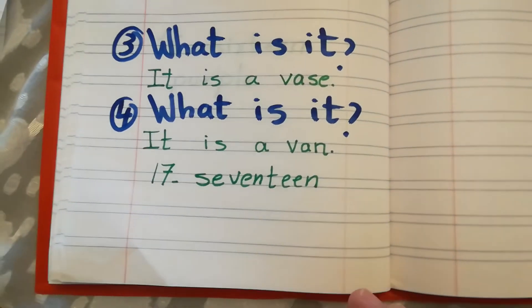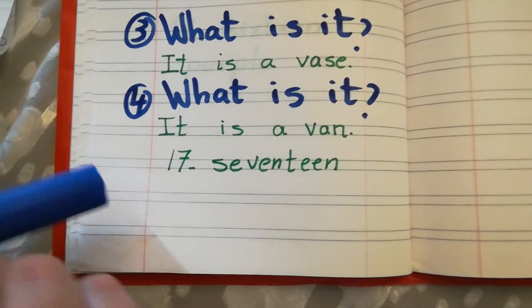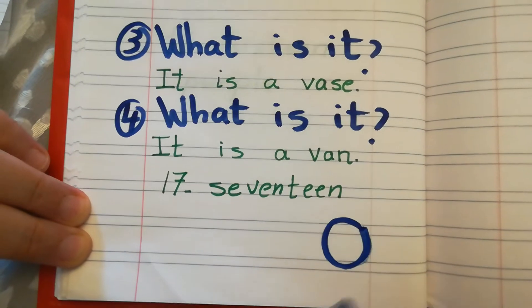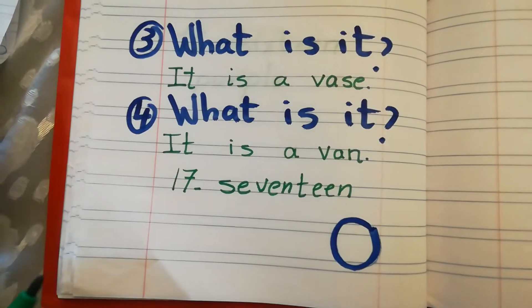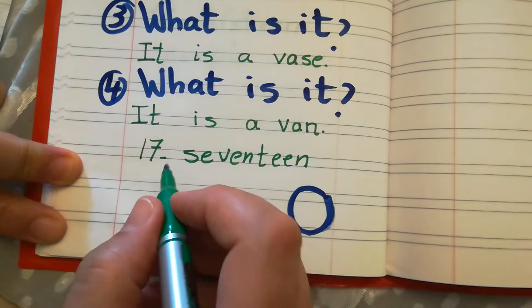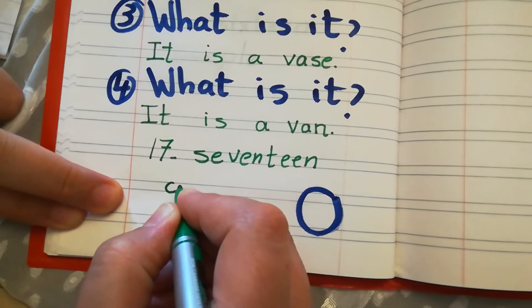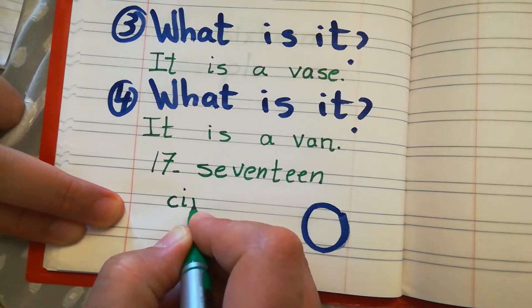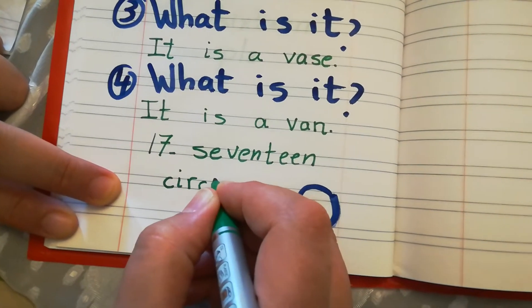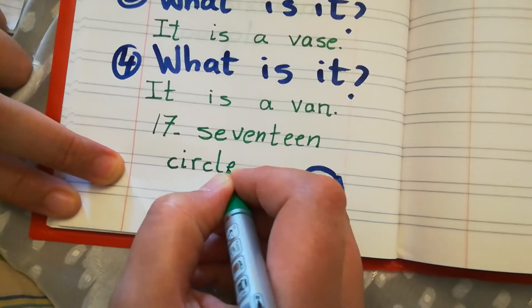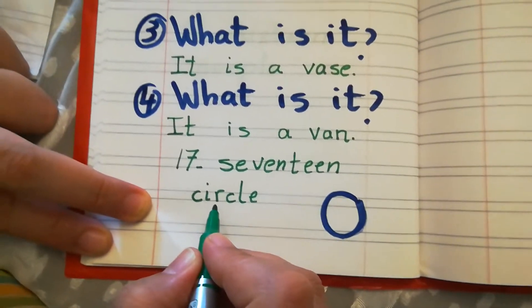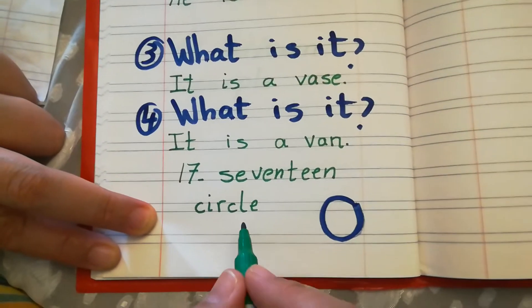Today we are going to learn a new shape. What is this shape? Circle. C, I, R, C, L, E. Circle. Again: C, I, R, C, L, E. Circle.